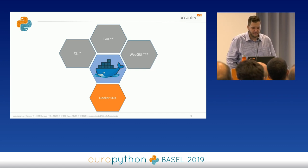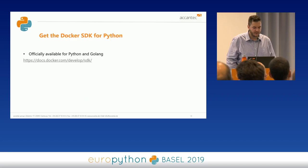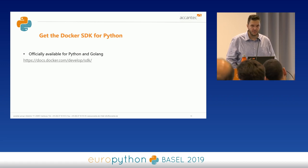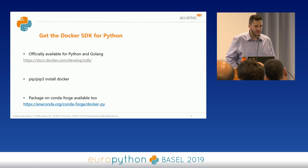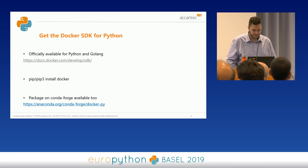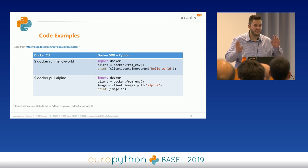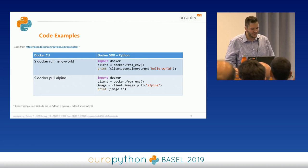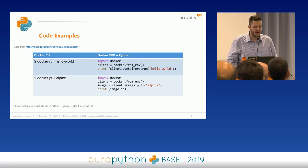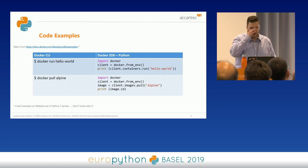To get it, it's easy. It's officially available for Python and Golang, and there's awesome documentation available. It's really just pip3 install docker. There's also a Conda package available. The code examples on the website are written in Python 2 — I'm not sure why — but I wrote them in Python 3, as you'll see from the print statement. On the left side you see what you'd usually type into the command line, and on the right side the equivalent using a Python script with the Docker SDK.